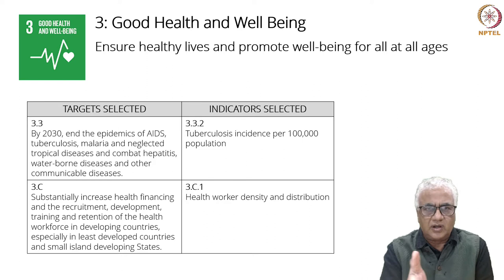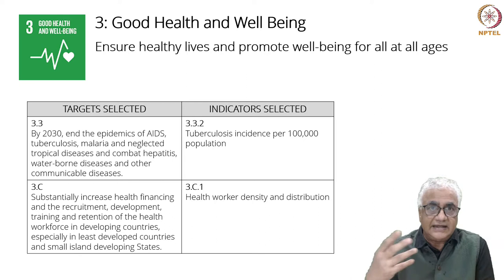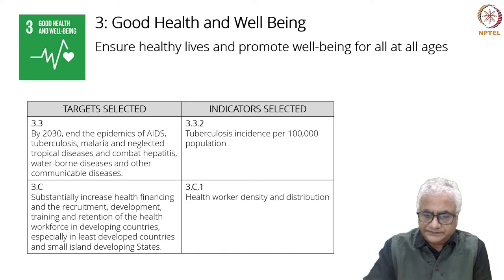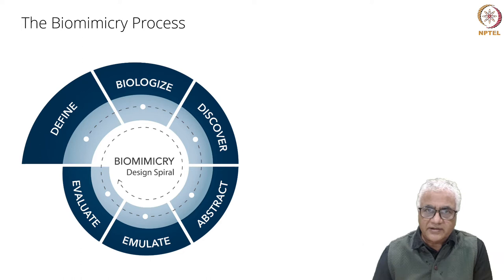What is the next step? You have to look for information on the goal. This is available on the UNSDG website. She looks at the targets she selected and also the indicators. Mugda has chosen good health and well-being — these are the targets, these are the indicators. And she goes to the process, which says: define, biologize, discover, abstract, emulate, evaluate. These are the steps she must go through.